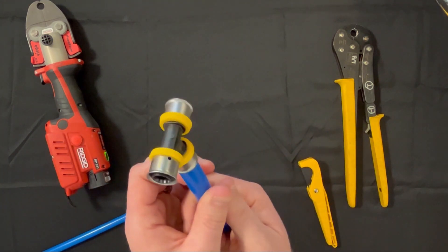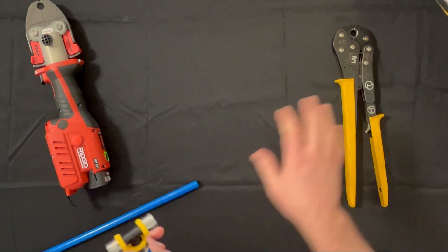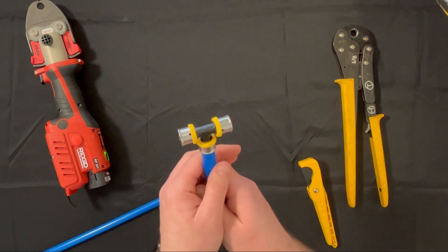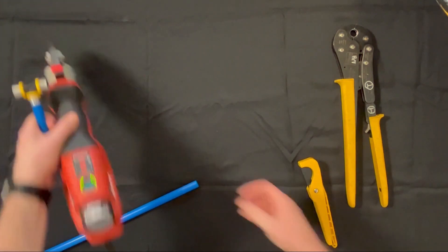Once we have fully inserted the fitting, we can use either a hand tool or a battery operated tool to make the joint. In this case, we will use a battery tool.